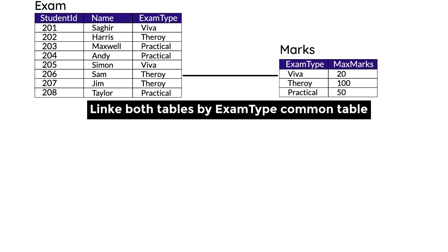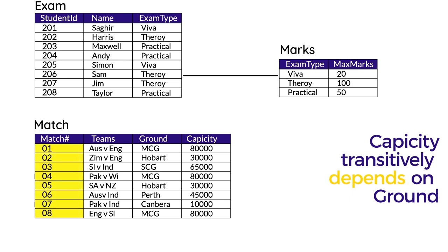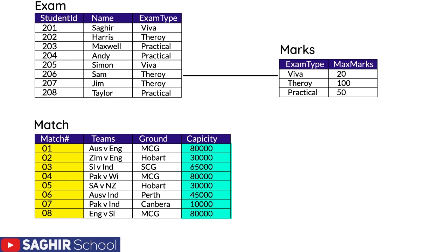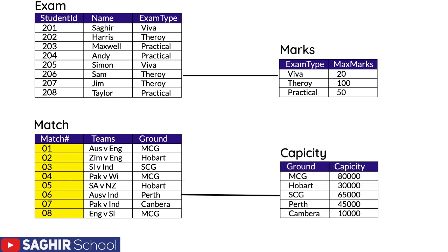Another example: match number is the primary key and the other columns are non-primary keys. Whenever a match is played in MCG it's 80,000 capacity, in Hobart it's 30,000, and SCG it's 65,000. We can already determine the capacity from the ground column — if the next match is played in MCG we already know capacity will be 80,000, if it's played in Perth it will be 45,000. Capacity is transitively dependent on the ground column. Again, we break the table, remove the transitive part, and make it into another table. From the main table, only the transitive part should be removed — that's the difference between transitive and partial dependency.